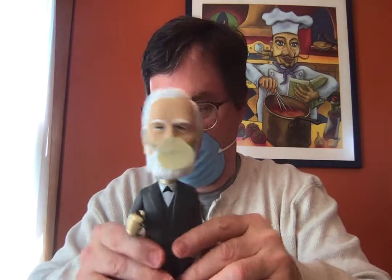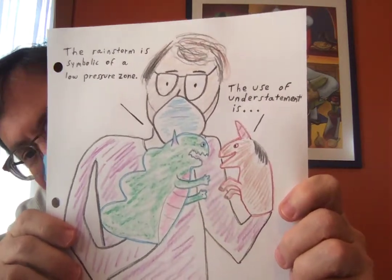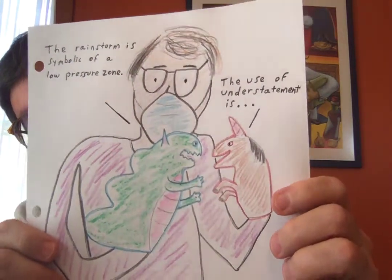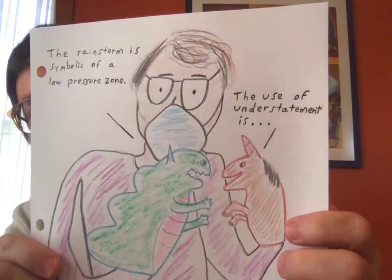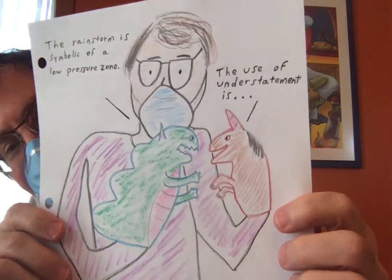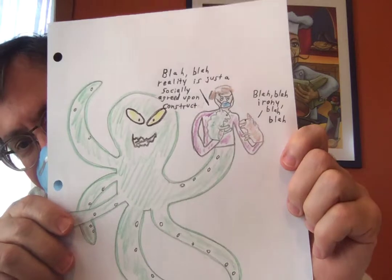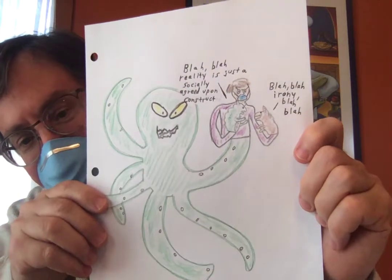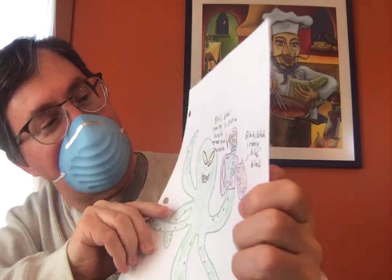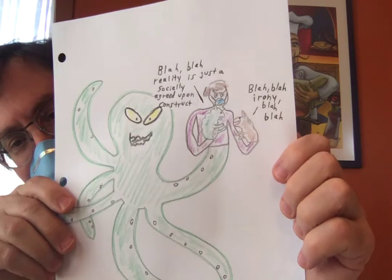And finally, I have one more comic to show you. I drew this comic myself — I hope you like it. In the first panel, you can see some weird puppeteer guy with a mask on his face holding two puppets. One of the puppets says, 'The rainstorm is symbolic of a low-pressure zone,' and the other puppet, which seems to be some sort of unicorn, says, 'The use of understatement is...' Then in the next panel, notice how the point of view zooms out, and you realize that the puppeteer is actually a puppet himself of some sort of malevolent-looking octopus. One character says, 'Reality is just a socially agreed-upon construct,' and the other says, 'Blah blah, irony, blah blah.'